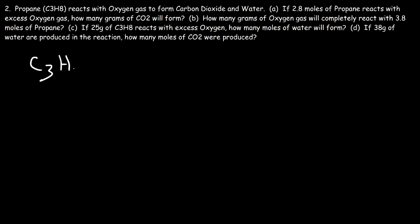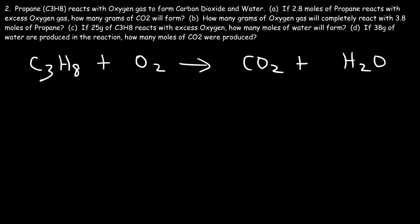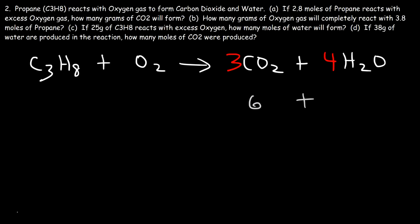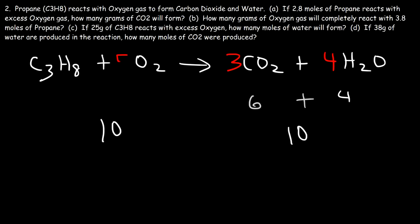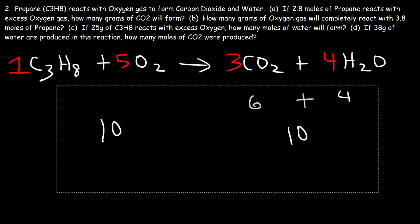Balancing the equation: we have three carbon atoms on the left, so put a 3 in front of CO₂. There are eight hydrogen atoms on the left and two on the right, so put a 4 in front of water (2 × 4 = 8). For oxygen: 3 × 2 = 6 from CO₂ and 4 × 1 = 4 from water gives 10 oxygen atoms on the right, so we need 10 on the left. 10 ÷ 2 = 5, so put a 5 in front of O₂. Now we have a balanced chemical equation.